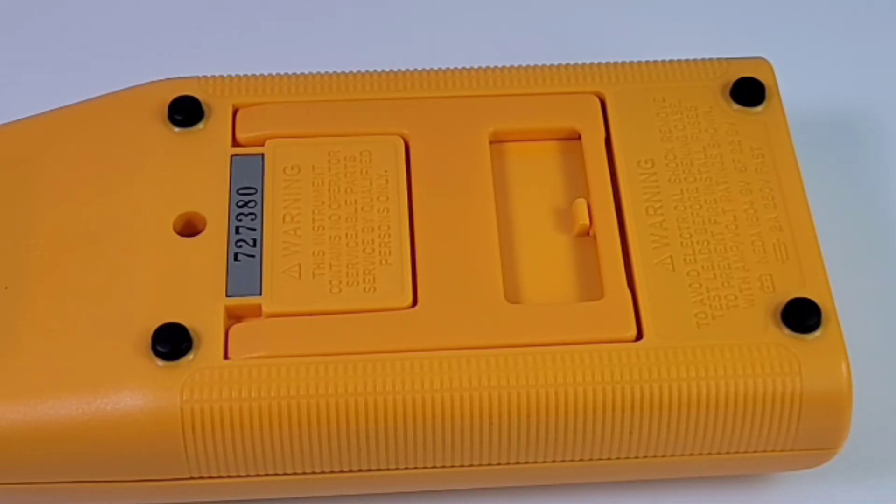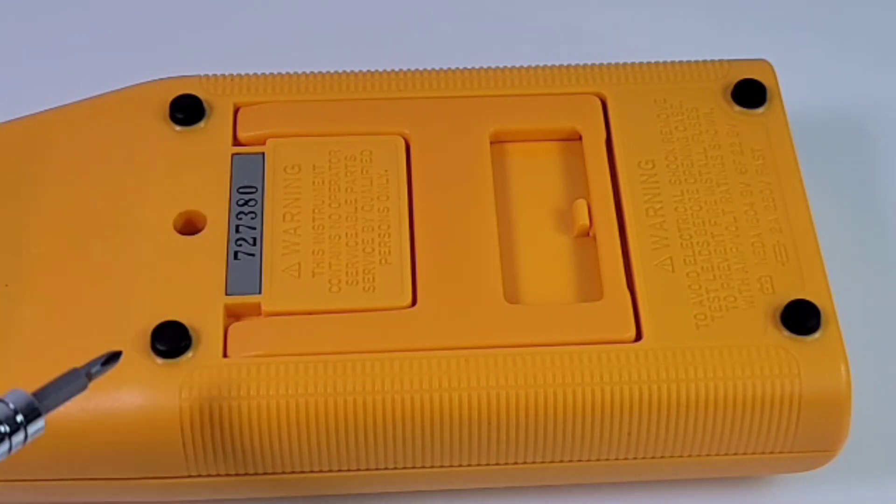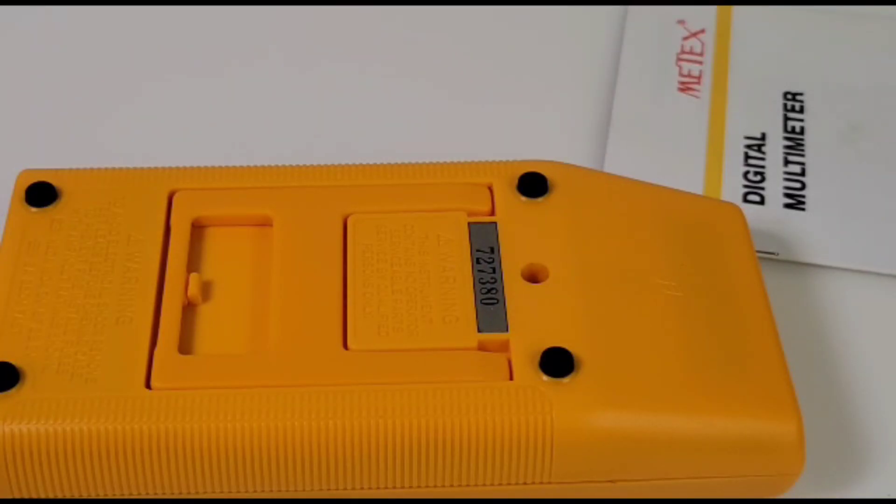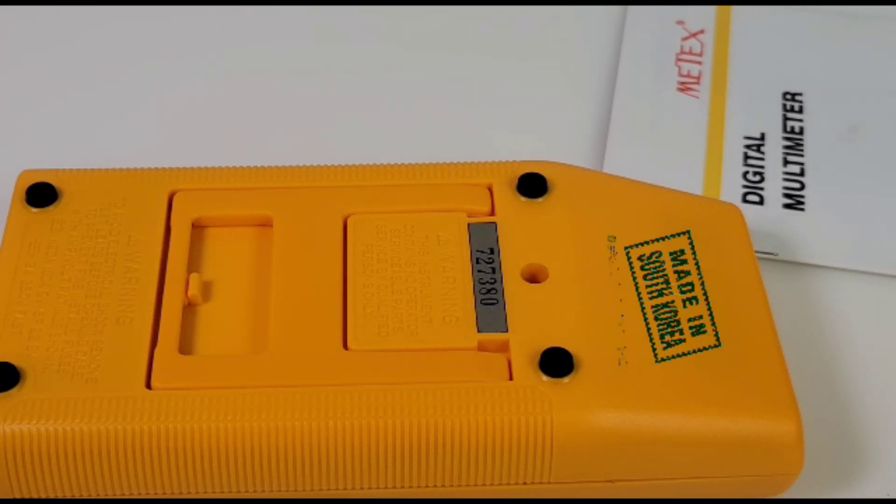On the back of the meter as well, we have those nice rubberized feet, total four altogether. So it gives a lot of stability when you're on a surface, especially a slippery surface. Nowhere in the multimeter does it say made in Korea. Strange. Most of the multimeters I have that were made back in Korea definitely have that signage.